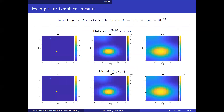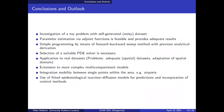This shows some time points with graphical results of the simulations, where we can see how the PDE evolves — here the artificial data set, here the model. We investigated a toy problem with a self-generated noisy data set — a simple problem — but we saw that parameter estimation via adjoint functions is feasible and provides adequate results.